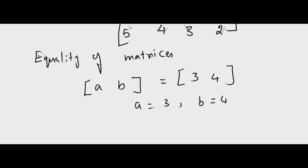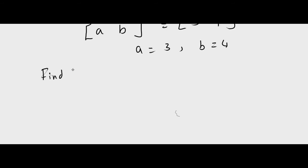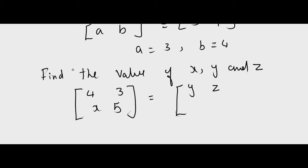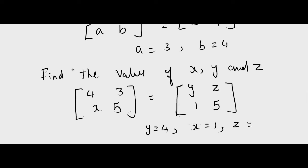Find the values of X, Y, and Z in the matrix: [4, 3; X, 5] equals [Y, Z; 1, 5]. By equality of matrices, we can see that Y equals 4, X equals 1, and Z equals 3.